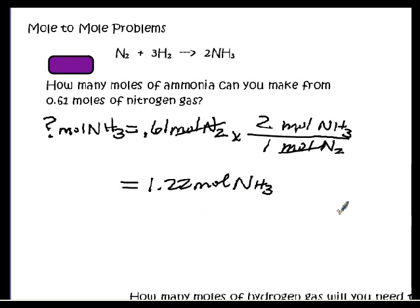To summarize: stoichiometry is a way of predicting how much of the reactants we need and how much of the products we're going to get. We use the molar ratio from the balanced equation. We can solve mole-to-mole problems by using dimensional analysis and our new friend, the molar ratio. Hope to see you again for another chance at learning some chemistry.